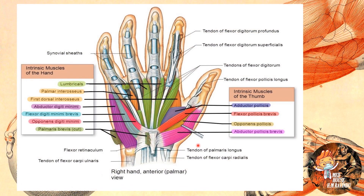Here you can see the abductor pollicis brevis, flexor pollicis brevis, opponens pollicis, and adductor pollicis muscles. On this side you can see the palmaris brevis, abductor digiti minimi, flexor digiti minimi brevis, and opponens digiti minimi muscles. And here you can see the lumbrical muscles and interossei muscles.